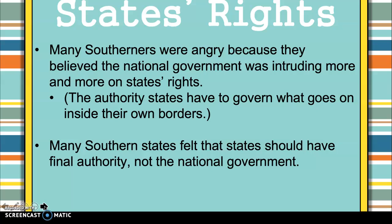We also have the issue of states' rights. A lot of Southerners were angry because they believed the national government was intruding on states' rights. The states believed that the people and governments of each state have the right to govern what goes on inside their own borders. For instance, the state of Georgia believed their people had the right to govern Georgia and that the federal government should have no say in that.